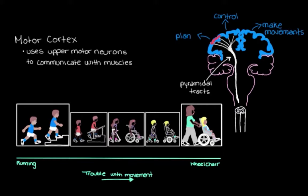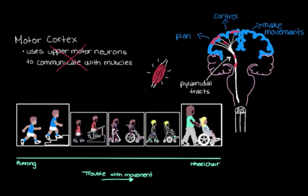When the motor cortex itself or these pyramidal tracts are damaged or underdeveloped or impaired, some muscles might not be able to get the right messages from the motor cortex — the messages that control their activity. When this happens, the net result is that the affected muscles get too active and their muscle tone increases. Muscle tone refers to the amount of tension in the muscle — think about stringing a guitar or a tennis racket: the tighter you pull the strings, the more tone they have. This increase in muscle tone makes the muscles really tight, really stiff, and difficult to move.